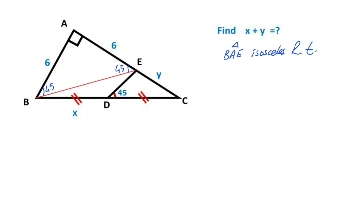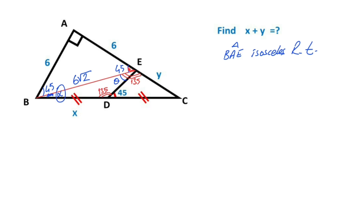Since six units is opposite the 45 degrees, the hypotenuse opposite the 90 degrees must equal 6√2. Notice that if here is 45 degrees, then here must equal 135 degrees, and here is also 135 degrees. Let's call this angle alpha and this angle theta.